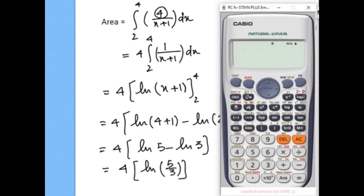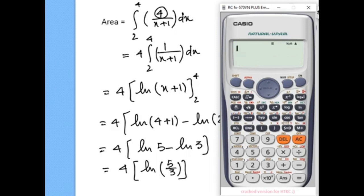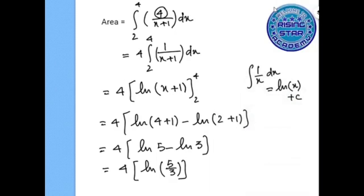Using the log rule, ln 5 minus ln 3 becomes ln of 5 over 3. Then multiplying by 4, we have 4 times ln of 5 over 3. Using the calculator to simplify, the answer is approximately 2.04.